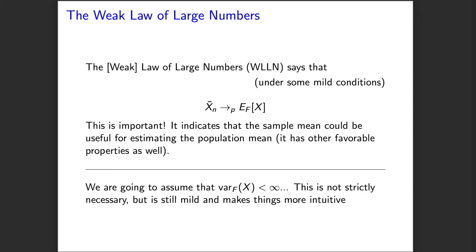The weak law of large numbers says that under some very mild conditions, as n goes to infinity, the sample mean converges in probability to the population mean. This is quite important — it tells us that the sample mean is a useful estimator for the population mean. One thing you would like in an estimator is consistency, meaning your estimator converges in probability to what you're trying to estimate as your sample grows larger.